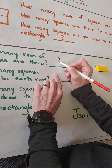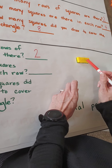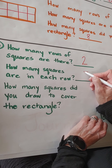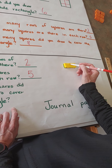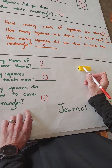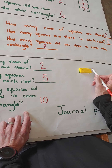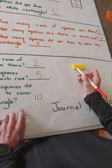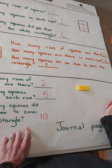How many squares are there in each row? Let's count: one, two, three, four, five — five squares in each row. How many squares did you draw to cover the rectangle? I can count individually: one through ten. Or I can count by twos: two, four, six, eight, ten. Or I can count by fives: five, ten. Ten. So there are ten squares to cover the rectangle.